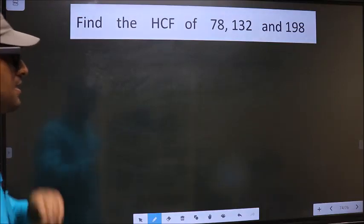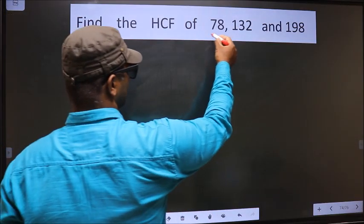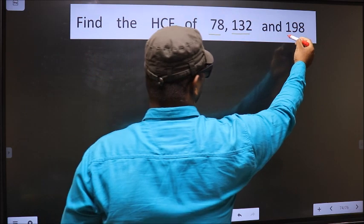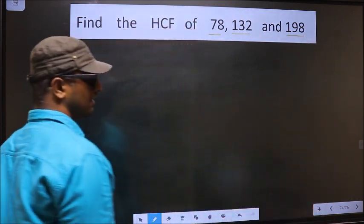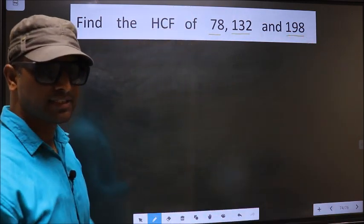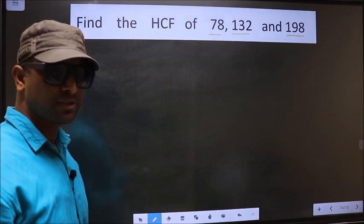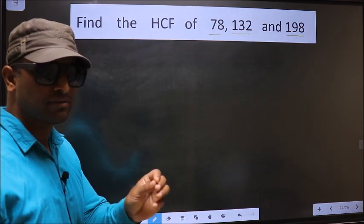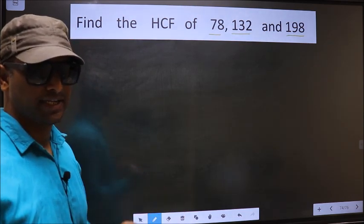Find the HCF of 78, 132, and 198. To find the HCF, first we should do the prime factorization of each number separately.